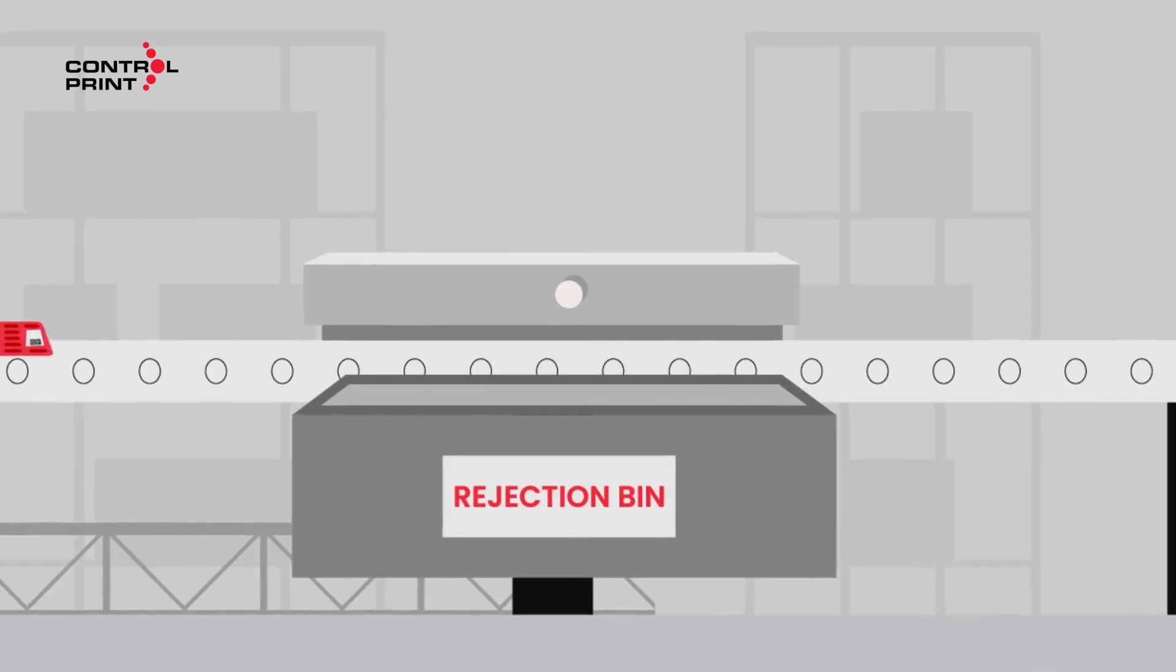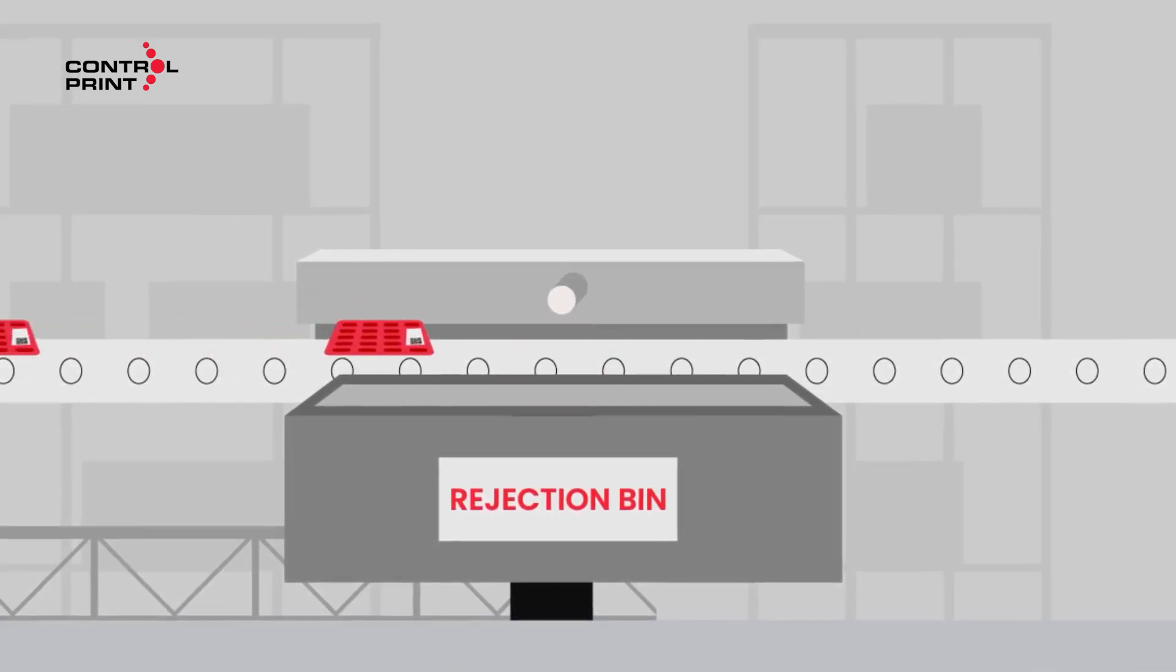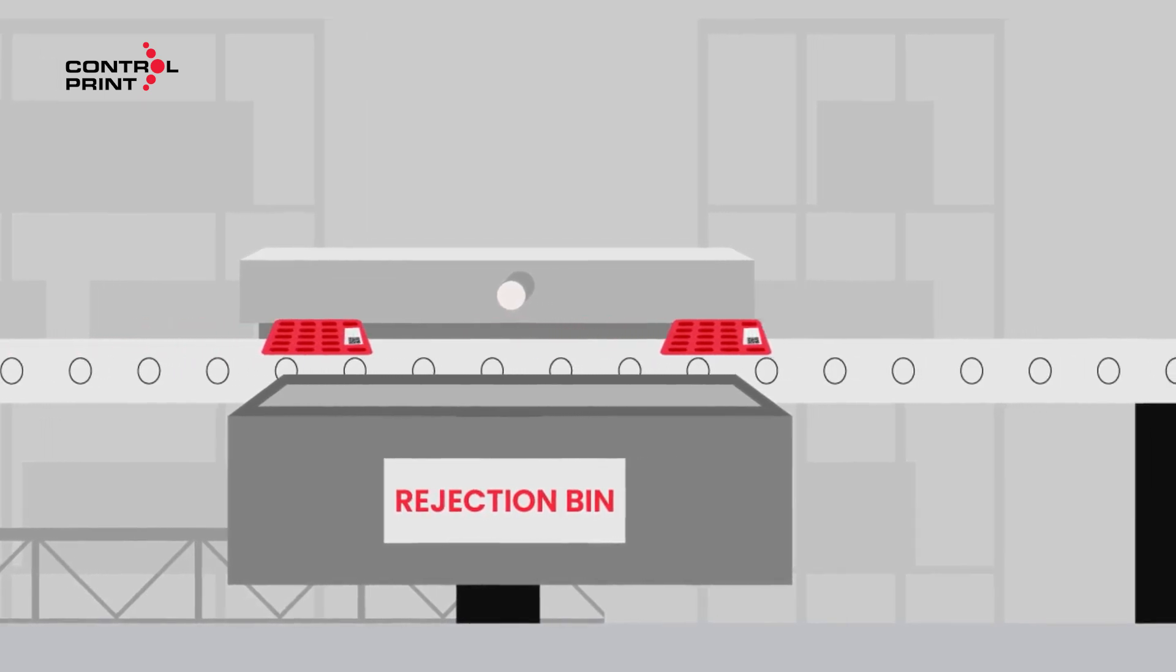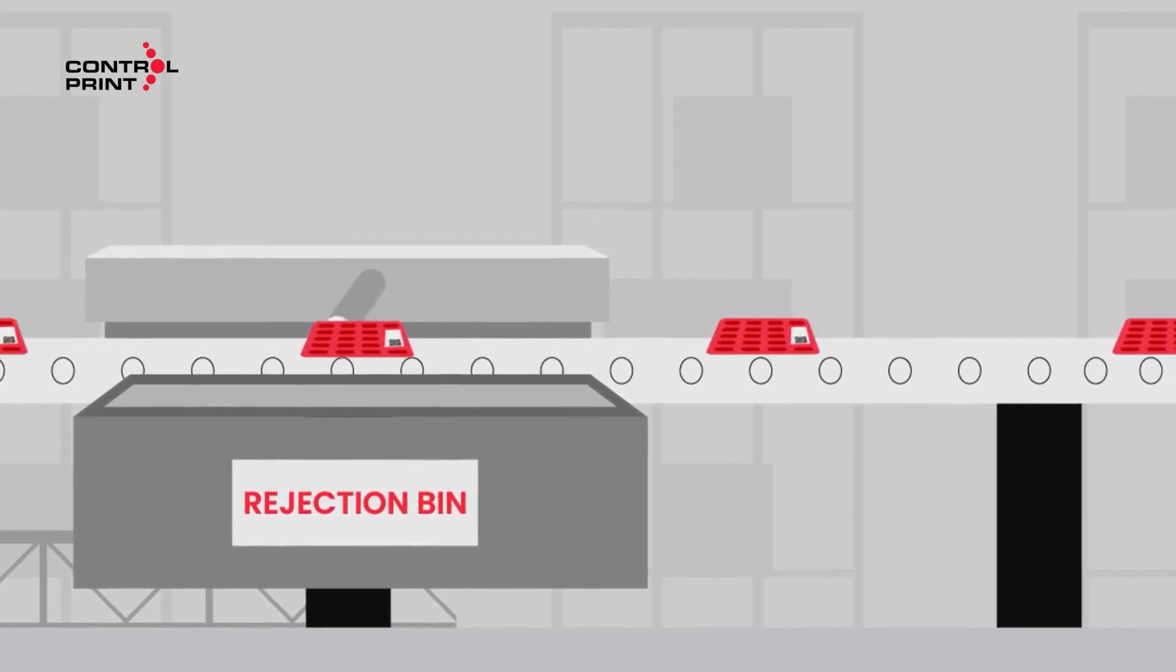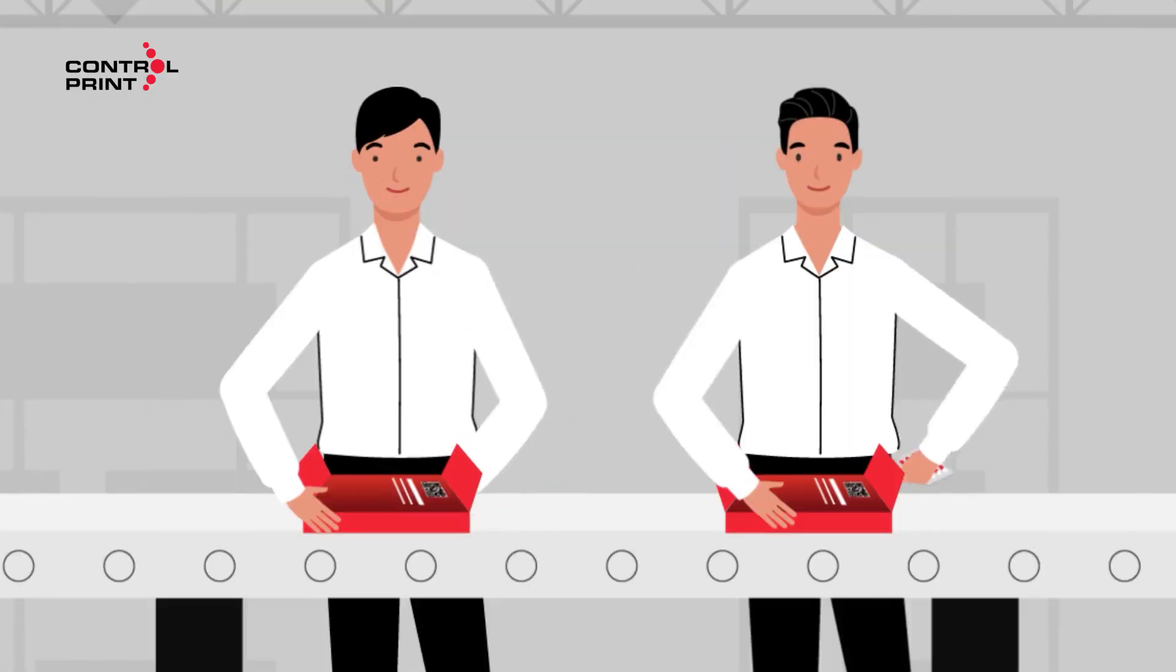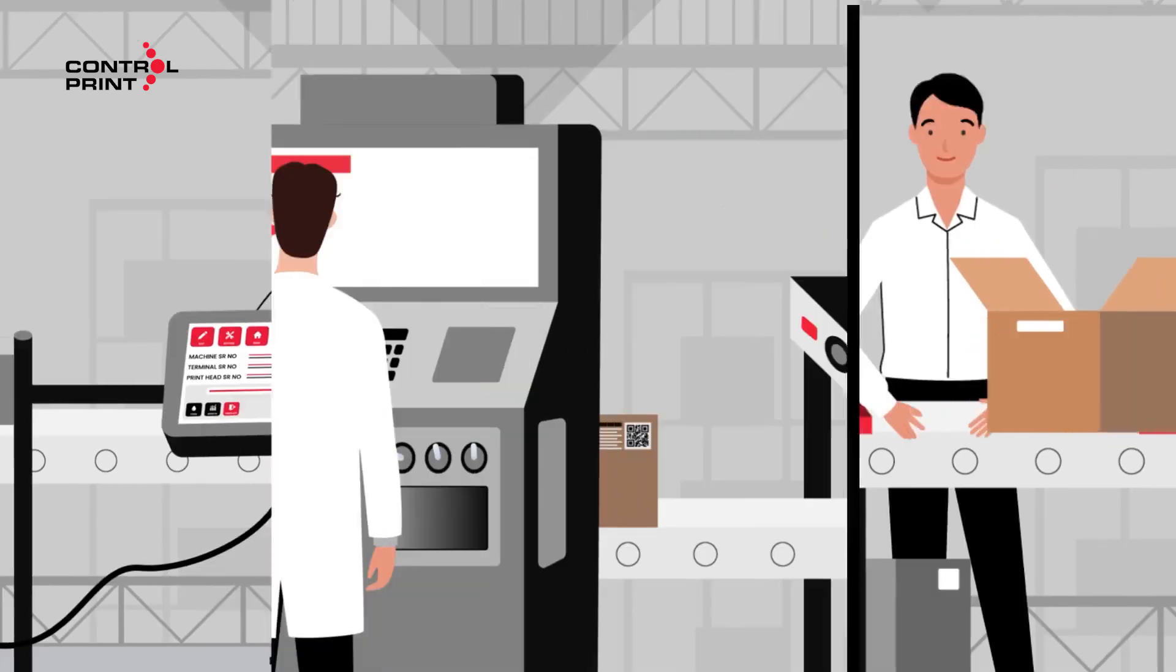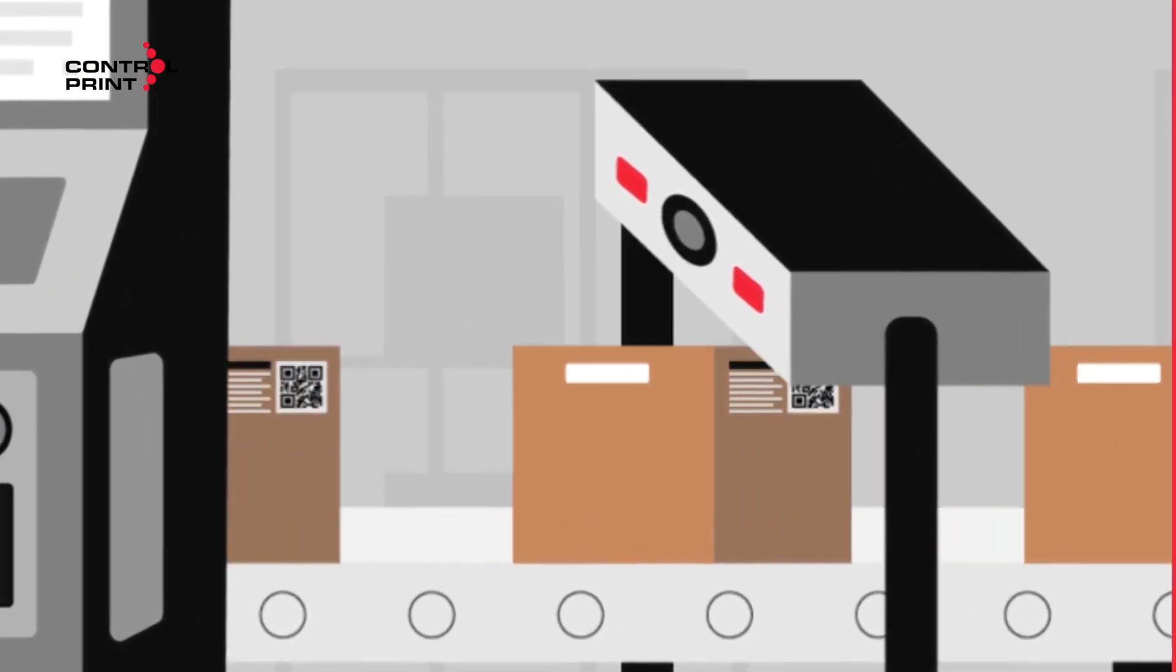Blister packs with unscannable codes are automatically directed to the rejection bin, ensuring that only products meeting strict quality standards move forward in the process. A QR code printed onto each mono and shipper carton ensures complete traceability and compliance.